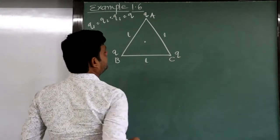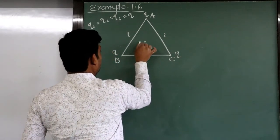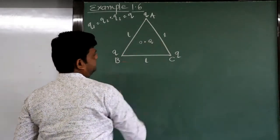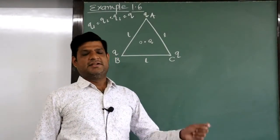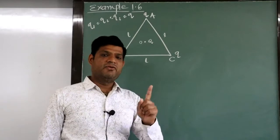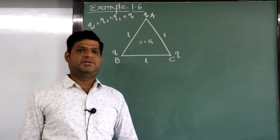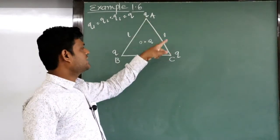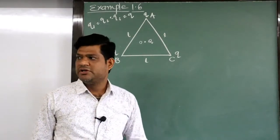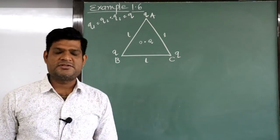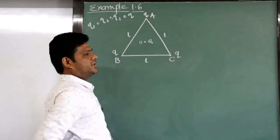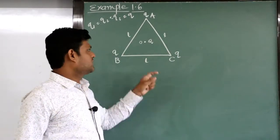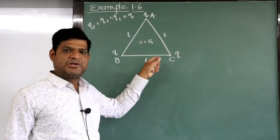From the geometry, this is the center O. Capital Q is the charge kept at the center O. The question is: find out the force acting on this capital Q charge at point O due to the charges at the three vertices.